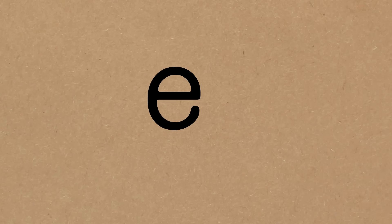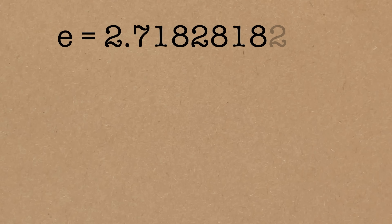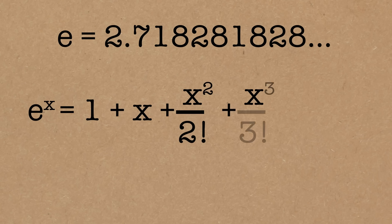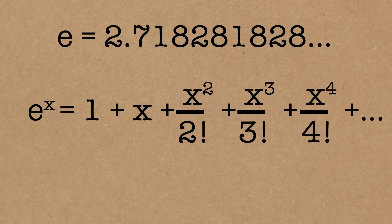The trick to this is thinking about the exponential function E to the power X, where E is just our number 2.718 etc. We can write this as 1 plus X plus X squared over 2 factorial plus X cubed over 3 factorial. This is just the series expansion of the exponential function — we've seen this before many times.